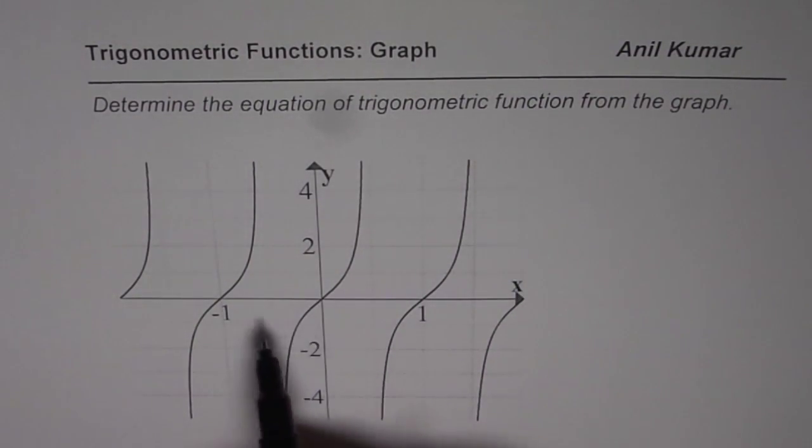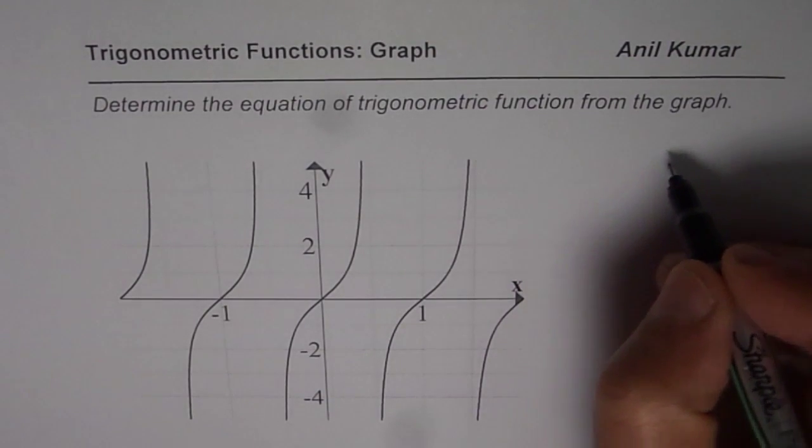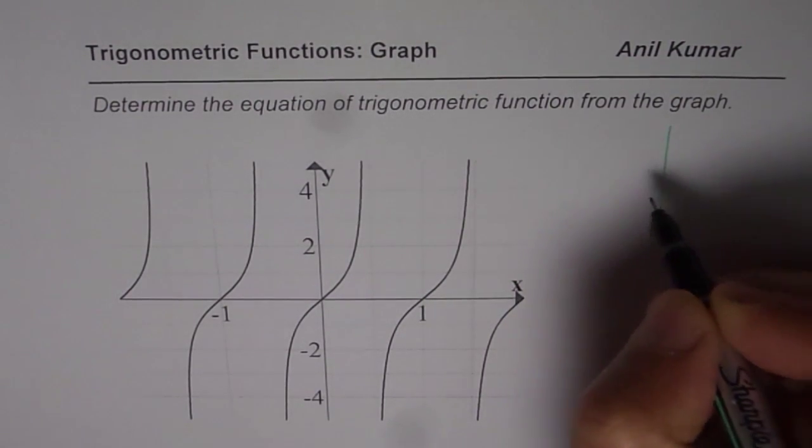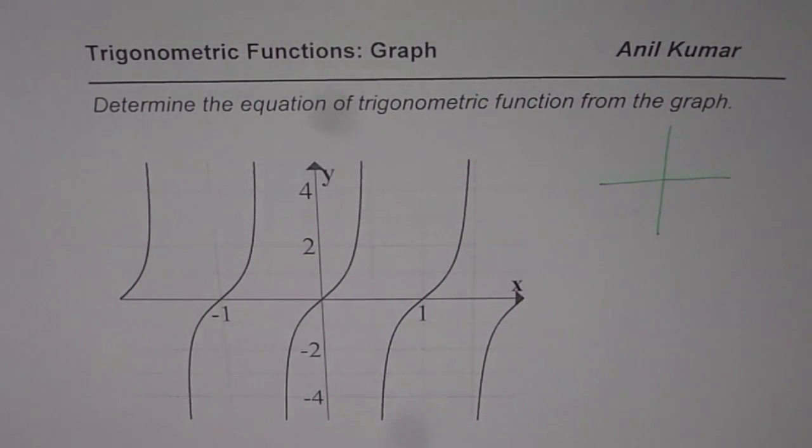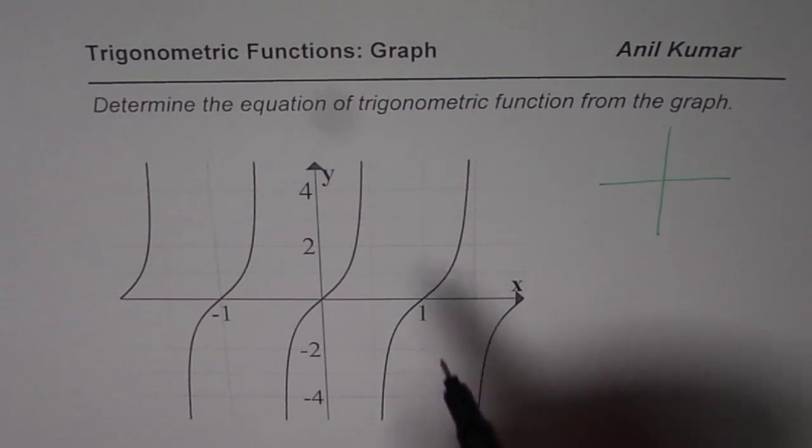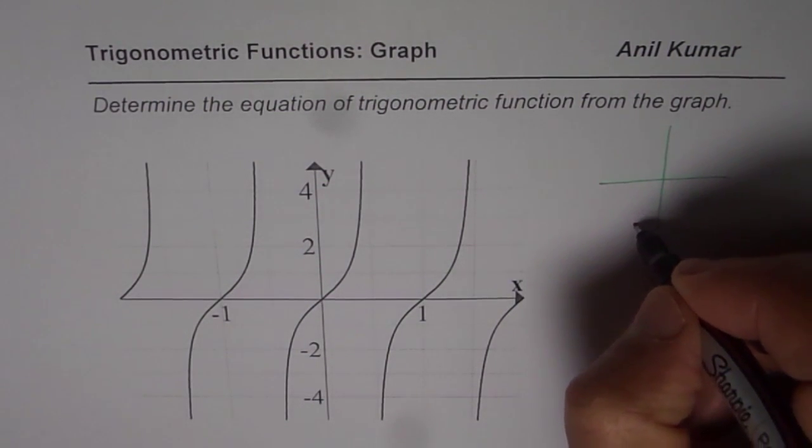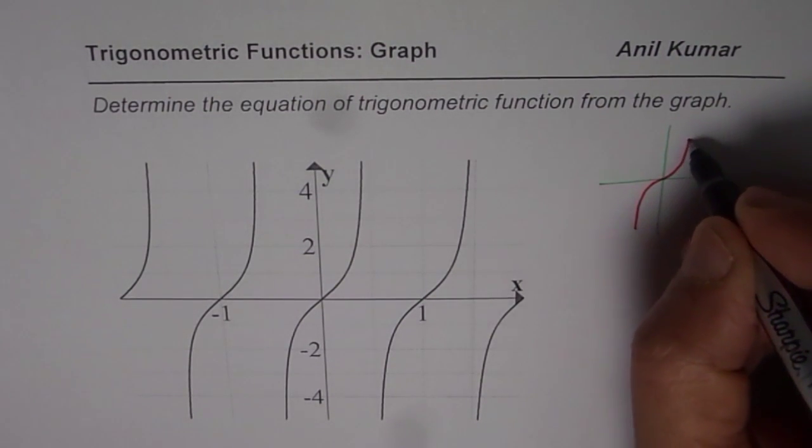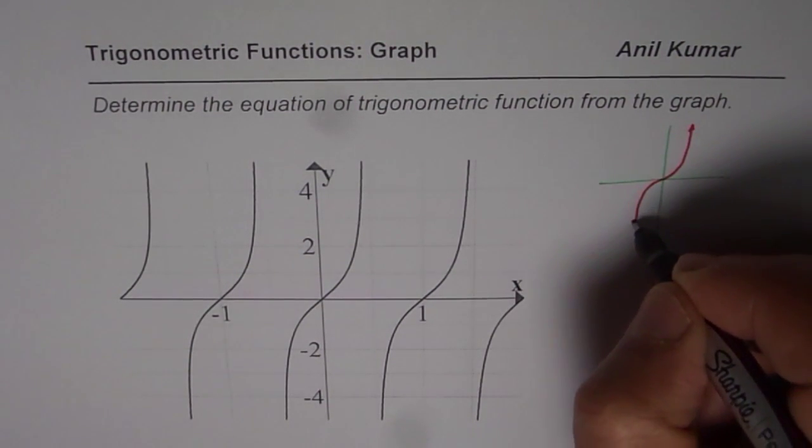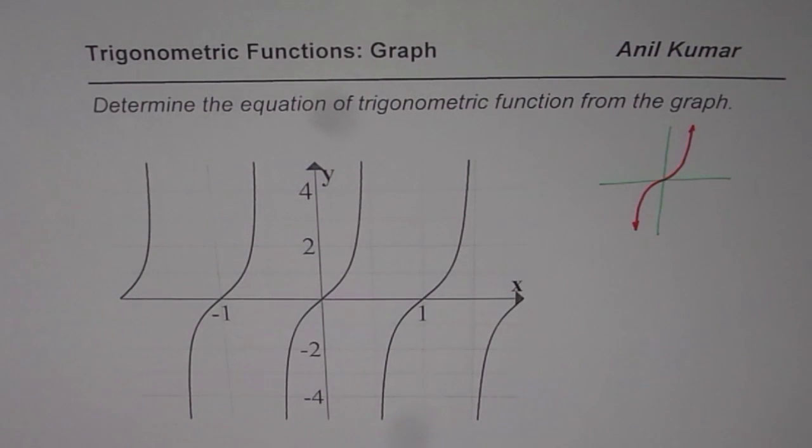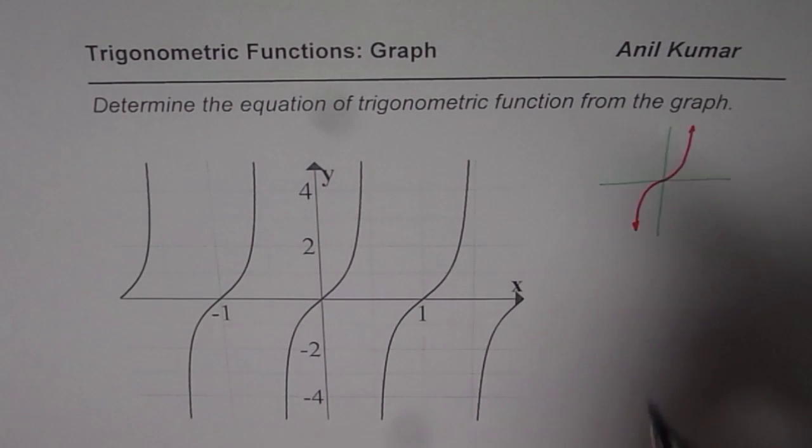Now as you can see, the graph represents a tan function which I can actually draw here - the base function - and then we will discuss how to find the equation of the given trigonometric function. So as we see, the characteristics are kind of like this, which is very similar to the tan function. So we will make an equation which is for tan function.